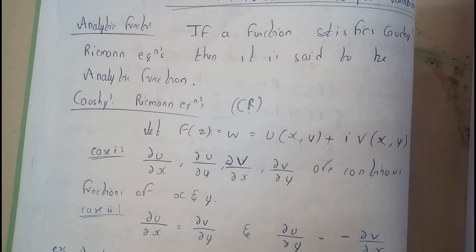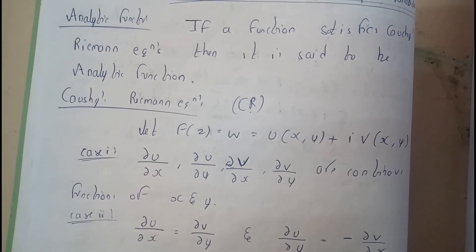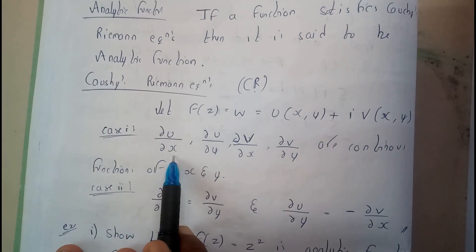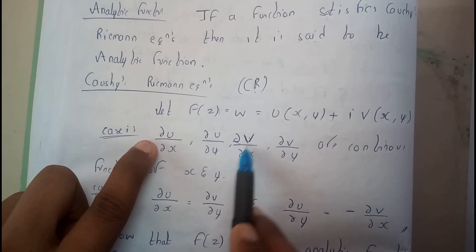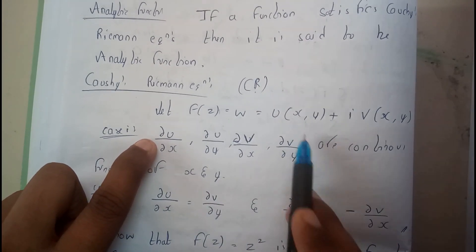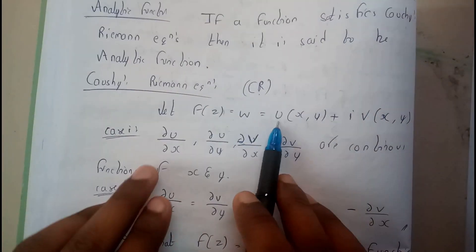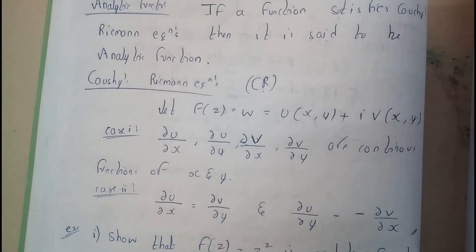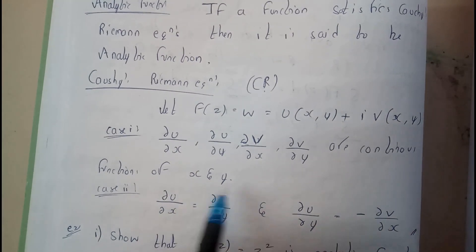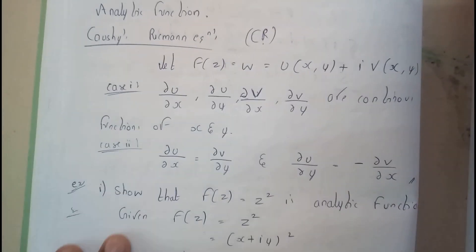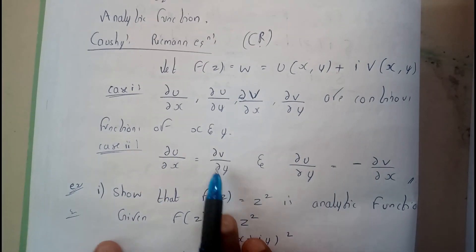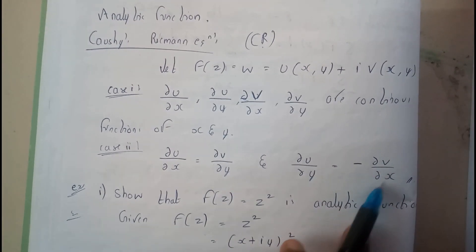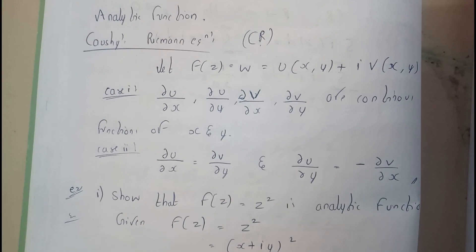You will understand further in the problems. Case one: ∂u/∂x, ∂u/∂y, ∂v/∂x, ∂v/∂y — these are the partial derivatives of u with respect to x and y, and v with respect to x and y — all these should be continuous functions of x and y. Case two: ∂u/∂x = ∂v/∂y, and ∂u/∂y = −∂v/∂x.